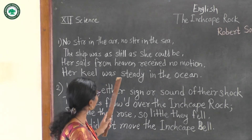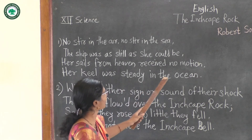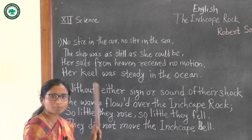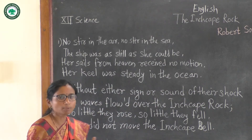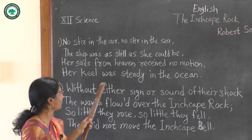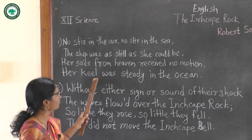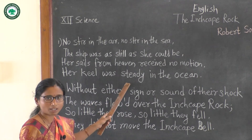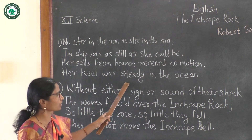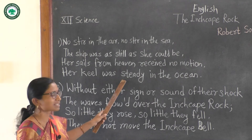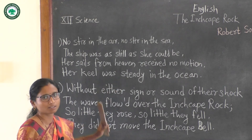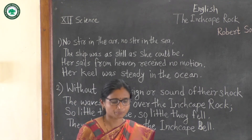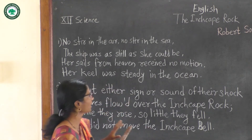Her keel was steady in the ocean. Keel means the base of the ship. The base of the ship also had no motion — it was steady and fixed in its position.